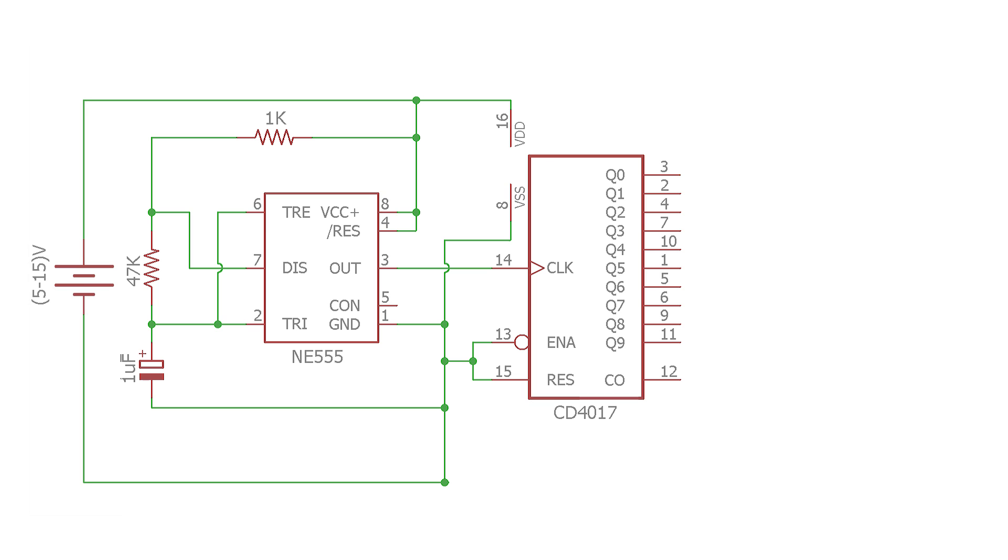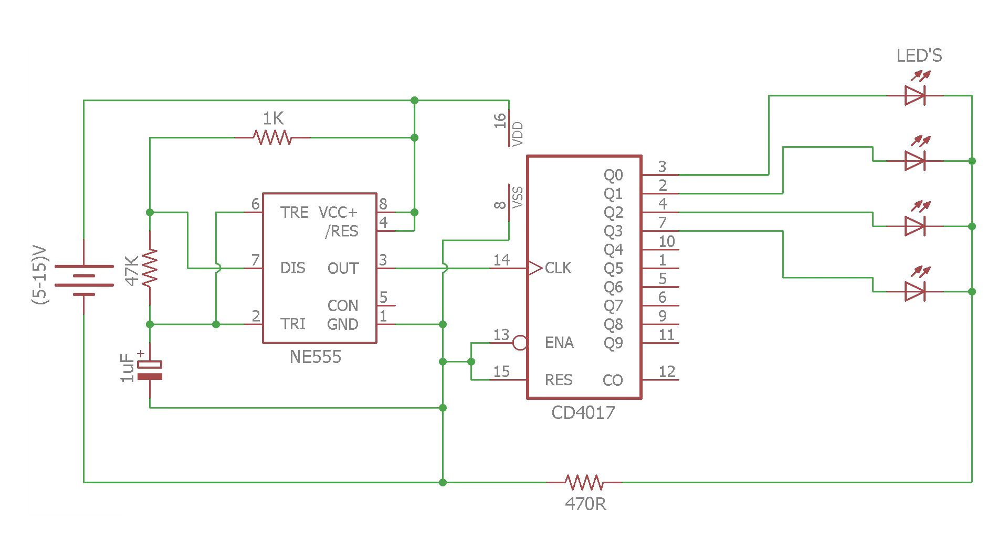So the first output which is at pin 3 connects to the first LED and so on until the sixth output connects to the sixth LED. After the sixth LED glows, we want the fifth LED to glow. So seventh output which is at pin 6 connects to fifth LED and so on until tenth output to the second LED.